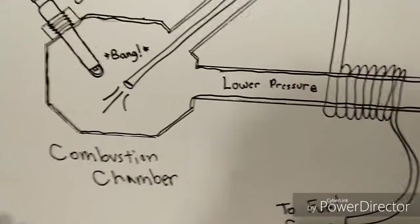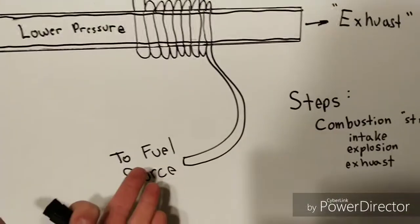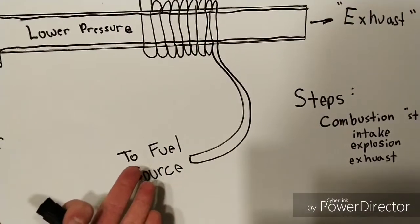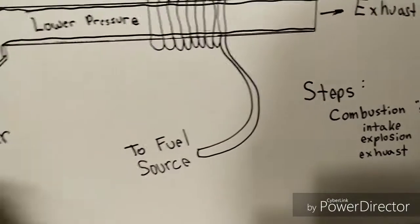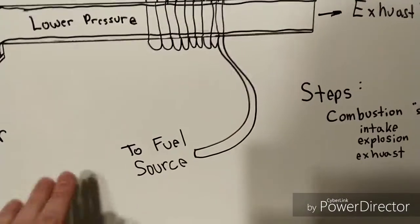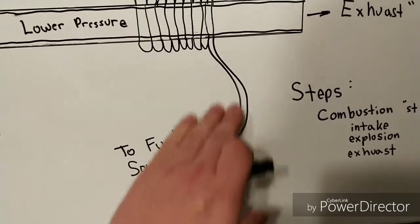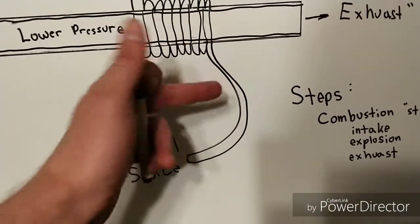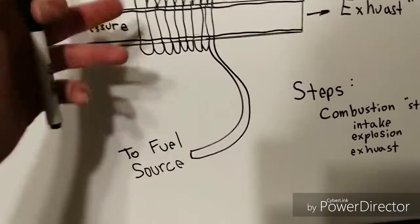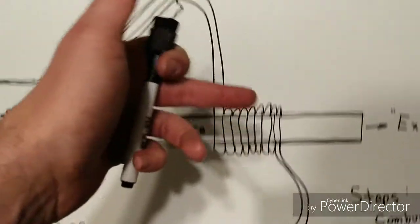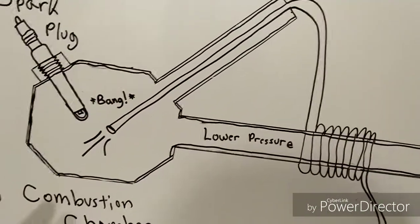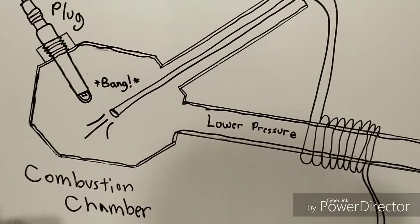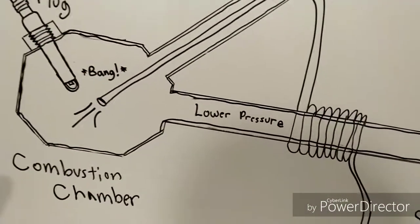The fuel source we used was propane. Propane comes in off of a nozzle, which isn't pictured here, through this coil, wraps around the exhaust, comes up the intake, and down into the combustion chamber — so there's no chance for leaks.